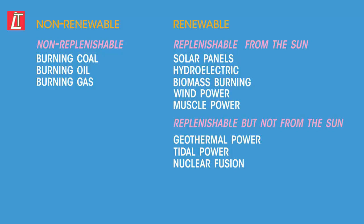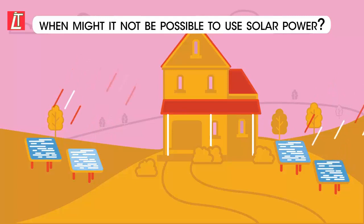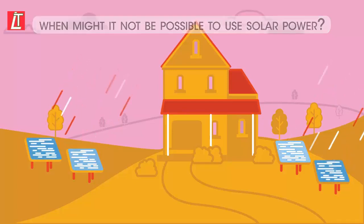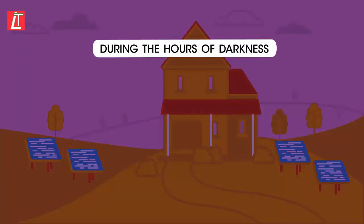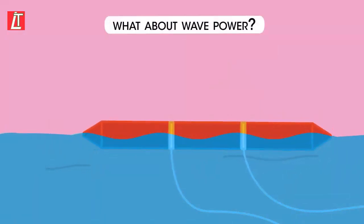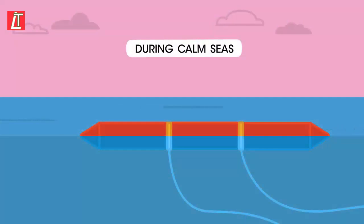Some energy resources are more reliable than others. When might it not be possible to use solar power? During the hours of darkness, of course. What about wave power? When might that not provide much energy? During calm seas.